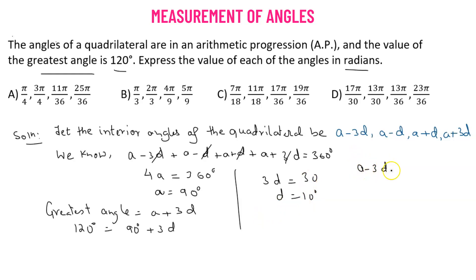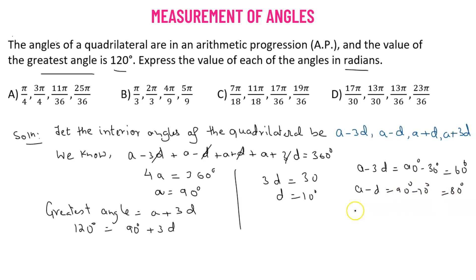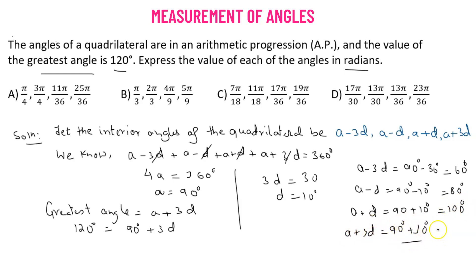Computing each angle: a minus 3d equals 90 minus 30 equals 60 degrees. Then a minus d equals 90 minus 10 equals 80 degrees. Then a plus d equals 90 plus 10 equals 100 degrees. And a plus 3d equals 90 plus 30 equals 120 degrees, which matches the given greatest angle. So we have obtained all four angles: 60°, 80°, 100°, and 120°.